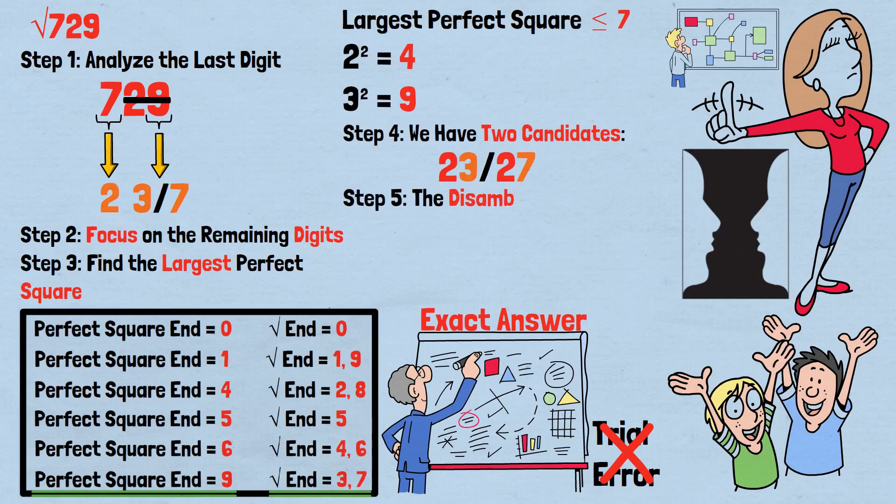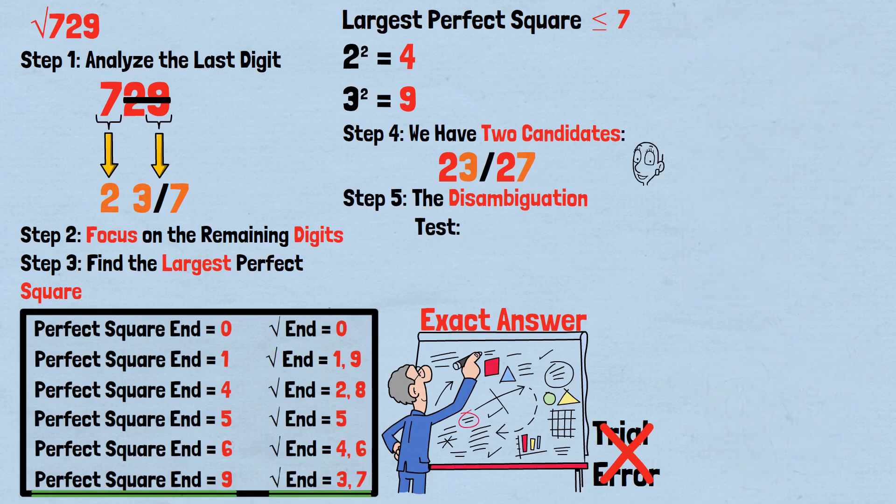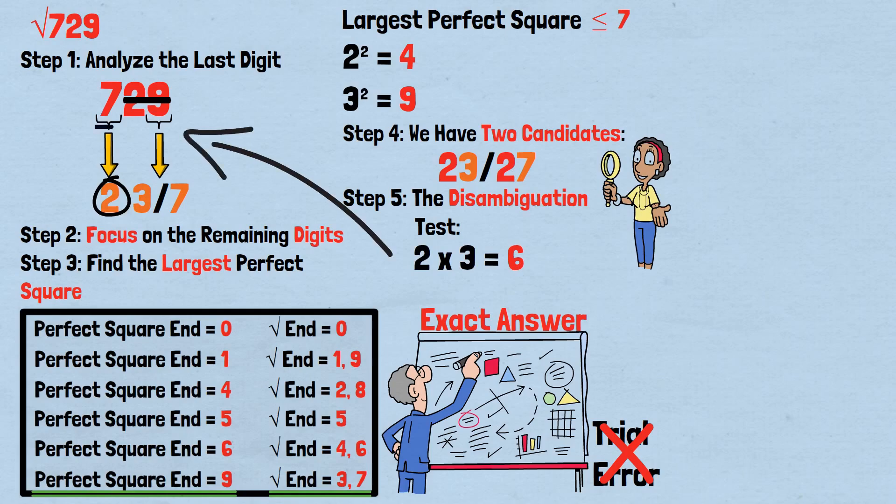Step 5: The disambiguation test. To determine which answer is correct, we use a comparison test. Take the first digit we found, 2, and multiply it by the next consecutive integer, 3. 2 times 3 equals 6. Now compare this result, 6, with the remaining digits we crossed out in step 2, which was 7.